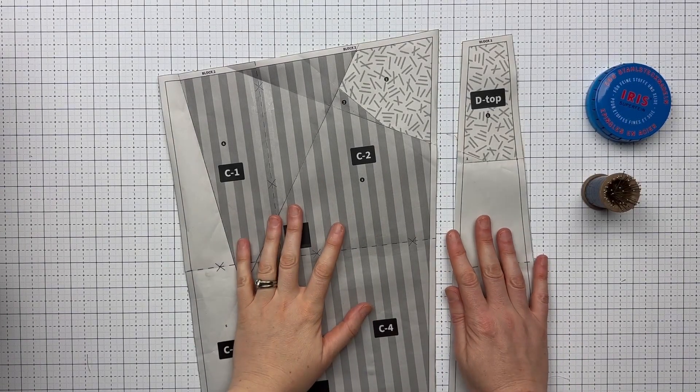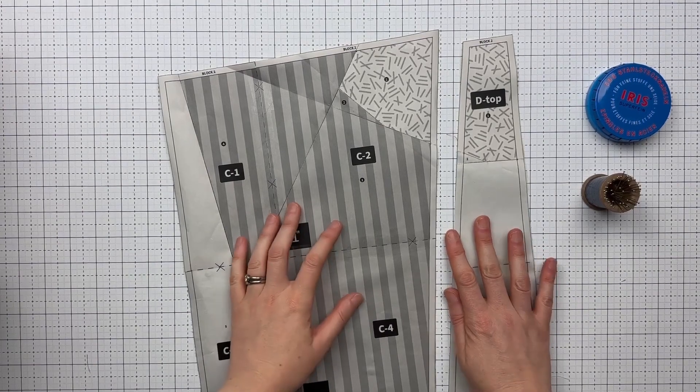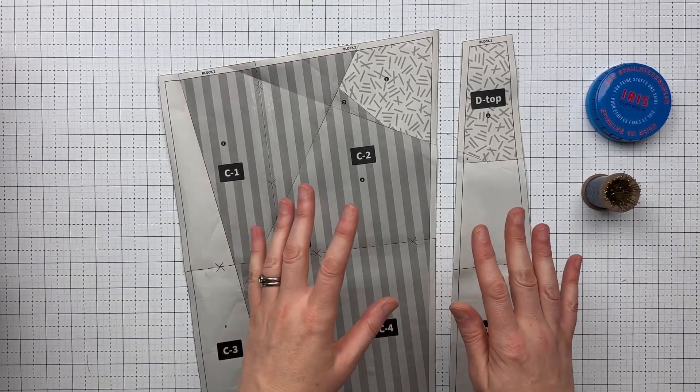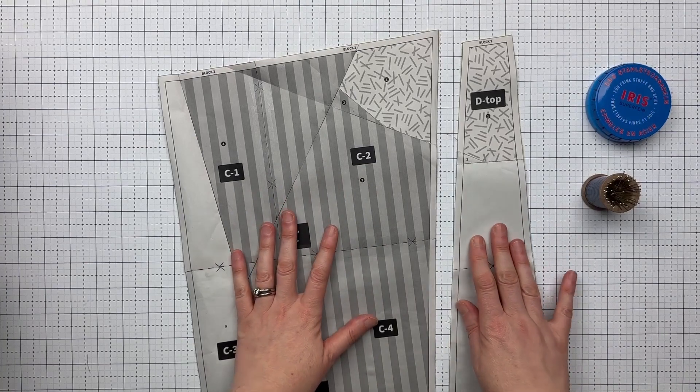Once I have my paper pieces ready to join, I use a technique called positioning pinning to achieve precise alignments between pieces. Let me show you.